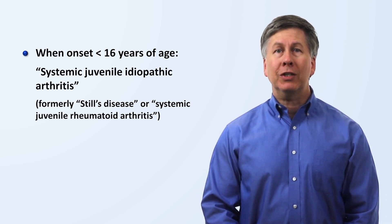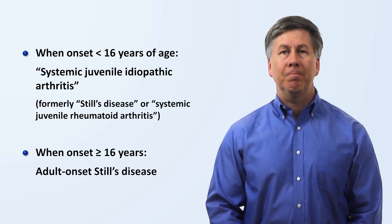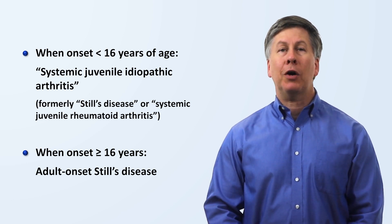When the onset of disease occurs at age 16 or later, it is known as adult-onset Still's disease.